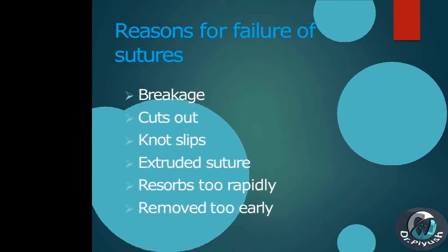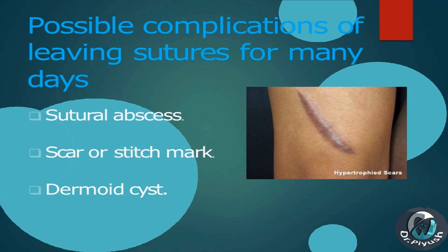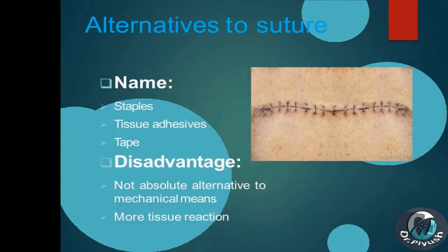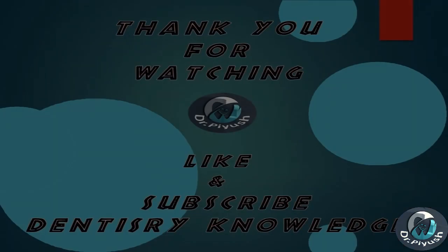Reasons for failure of sutures: breakage, cuts out, knot slips, extruded suture, resorbs too rapidly, or removed too early. Possible complications of leaving sutures for many days: sutural abscess, scar or stitch mark, dermoid cyst. Alternatives to suture: staples, tissue adhesive, and tape. Disadvantages of alternatives: not absolute alternatives to mechanical means, more tissue reaction.